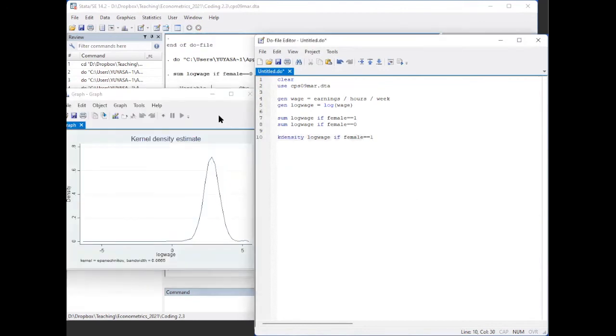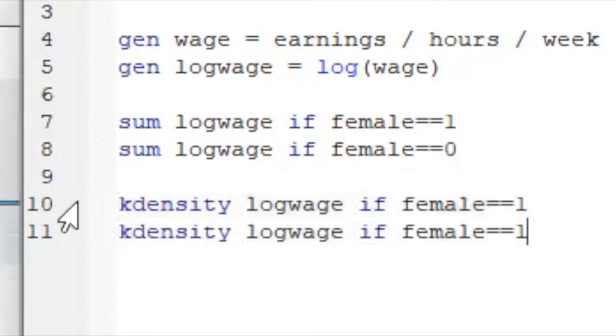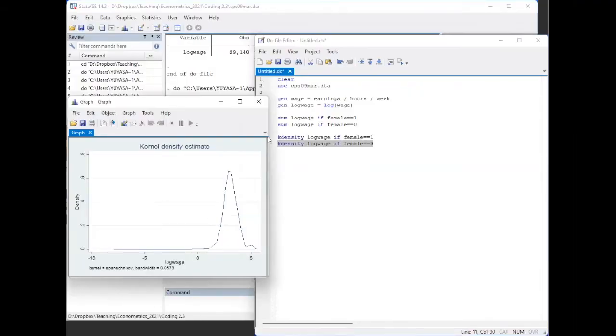Here's the distribution of the log wage for the female subsample. And now let's repeat this exercise for the men. By default, it can only display one density per time.